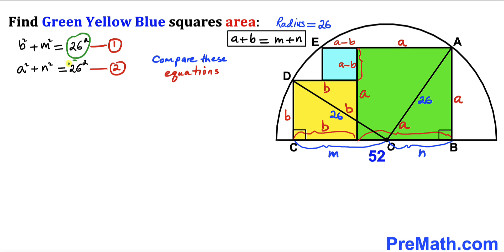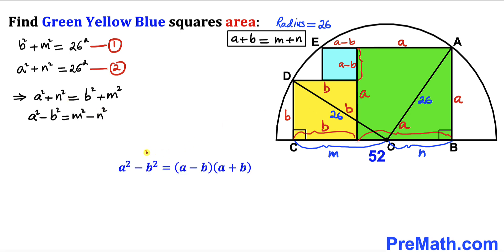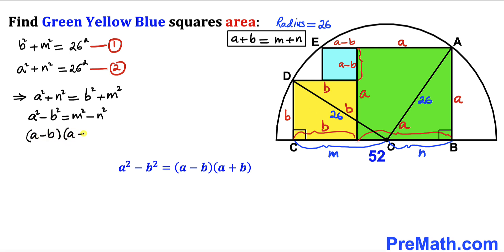Comparing equations one and two, the right-hand sides are identical, so we can equate the left-hand sides: a² + n² = b² + m². Moving b² to the left and n² to the right, and applying the identity x² − y² = (x − y)(x + y) on both sides, this becomes: (a − b)(a + b) = (m − n)(m + n).